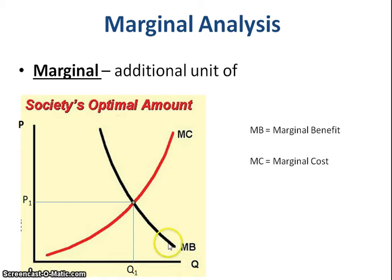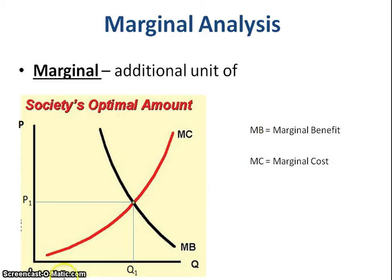When we talk about marginal benefit, we're talking about the additional benefit that's received from consuming or utilizing one additional unit. The additional unit is giving this additional benefit. And as you consume one more unit, you can see the additional benefit is going down.